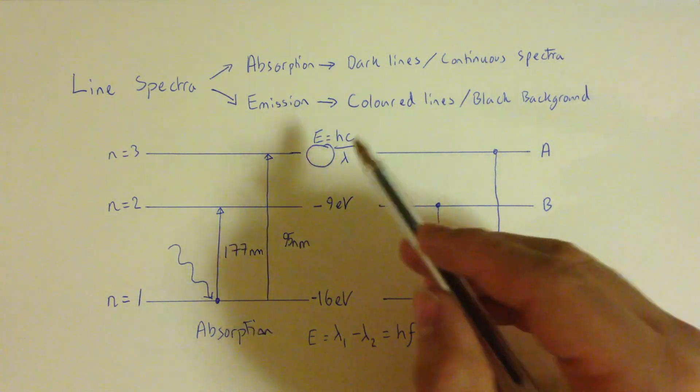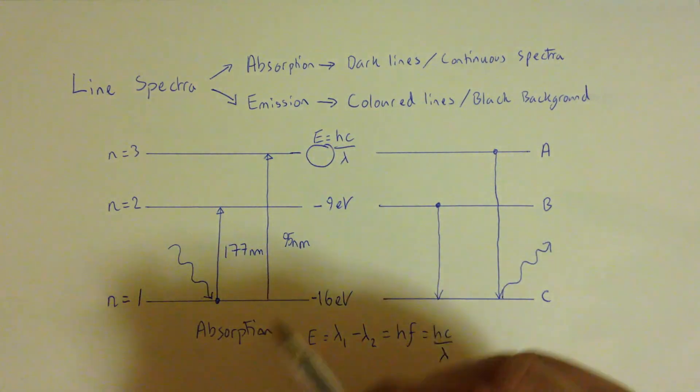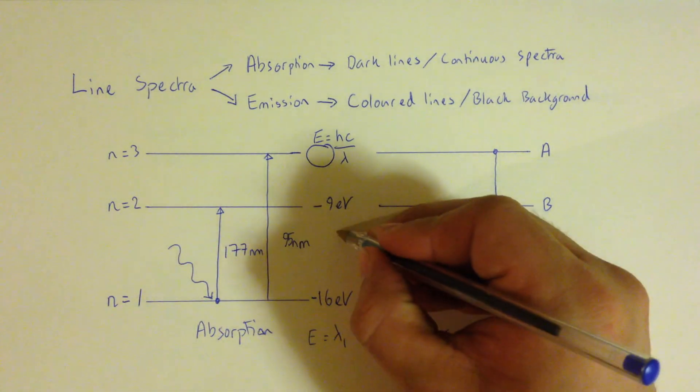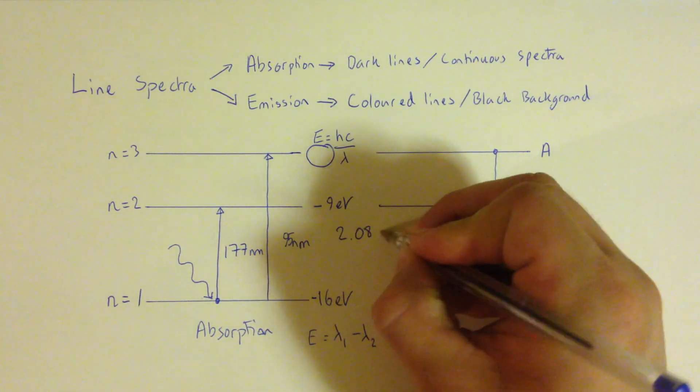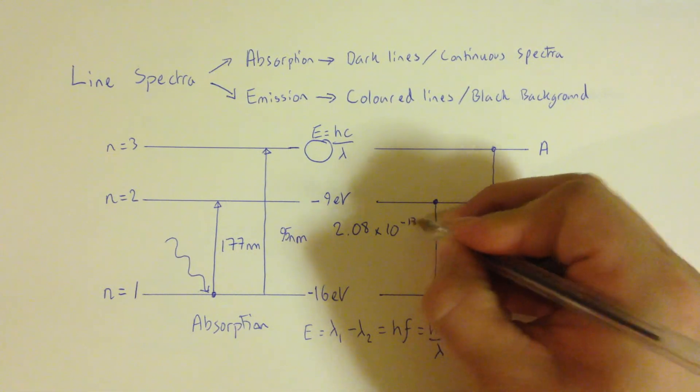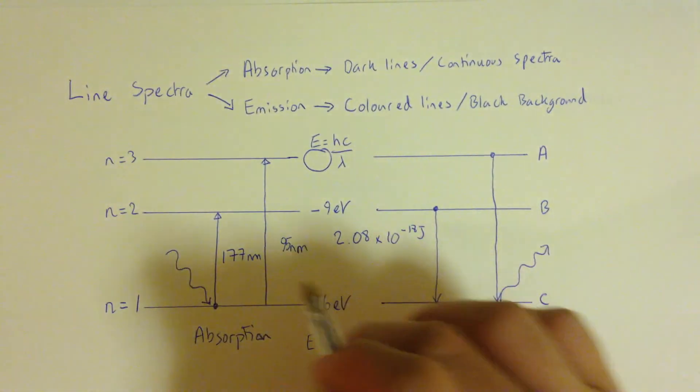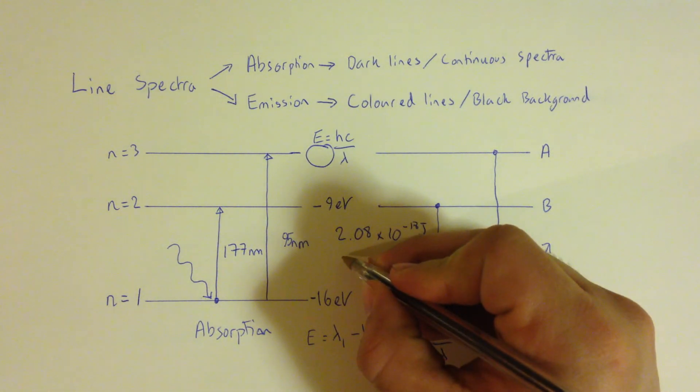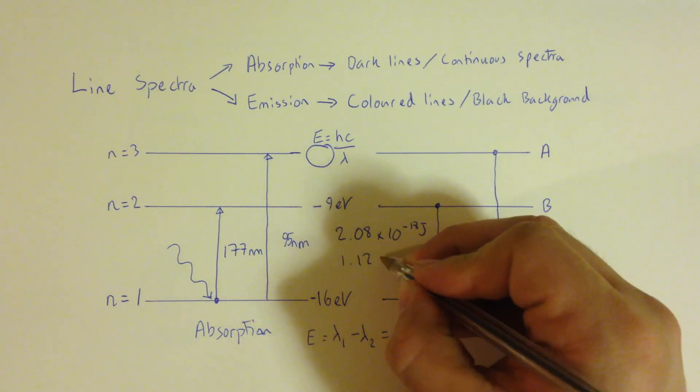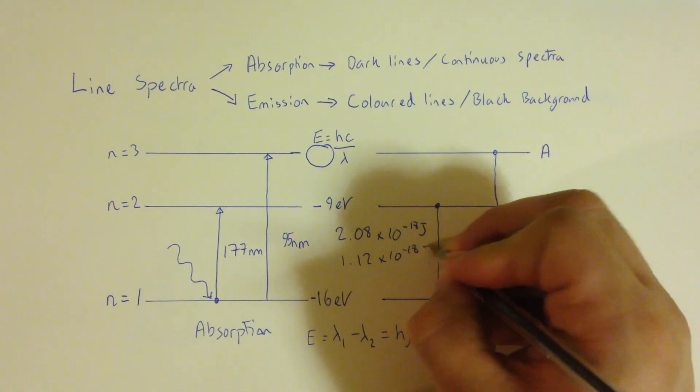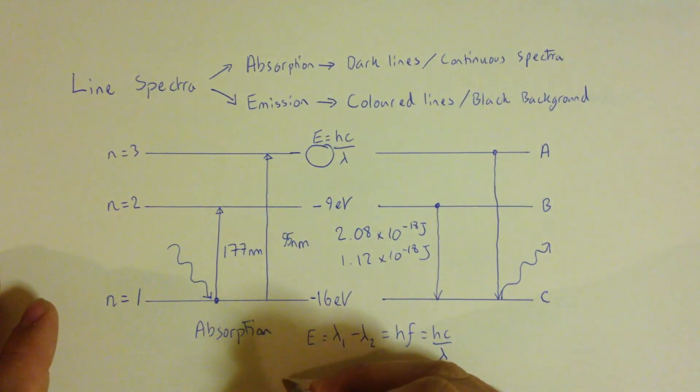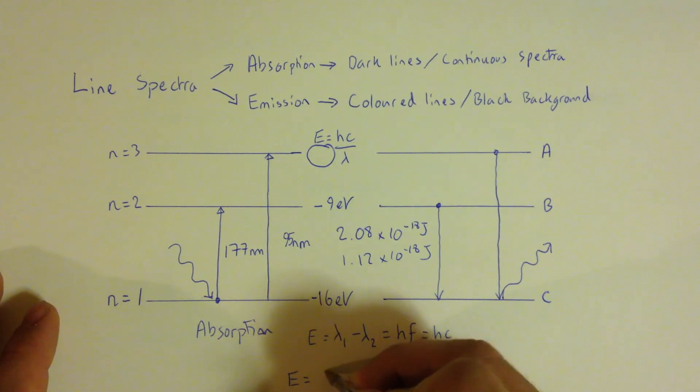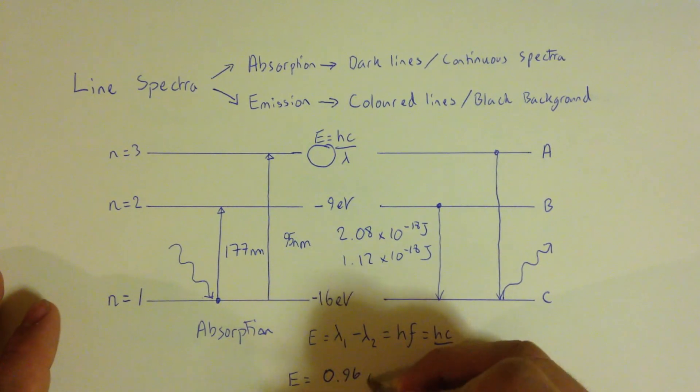So if I put this into my equation, Hc over lambda, H being the constant, C being the speed of light, I will get an energy corresponding to 2.8 times 10 to the minus 18 joules. If I do the same thing with my 177 nanometres, I'll get an energy of 1.12 times 10 to the minus 18 joules. So that is a difference in energy corresponding to 0.96 times 10 to the minus 18.